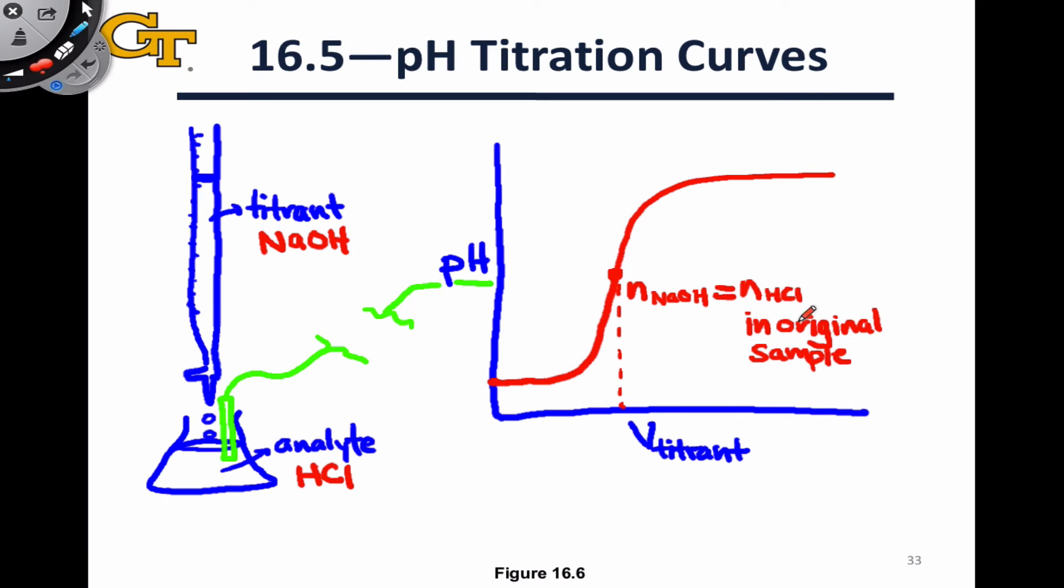Is equal to the number of moles of HCl in the original sample. So at this point, we've actually consumed all of the HCl, but this is the definition of the equivalence point, and it always shows up sort of halfway up this slope. For reasons that will become clear in future discussions, the pH at the equivalence point for this titration between a strong base and a strong acid is equal to 7. We have a neutral solution at the equivalence point.